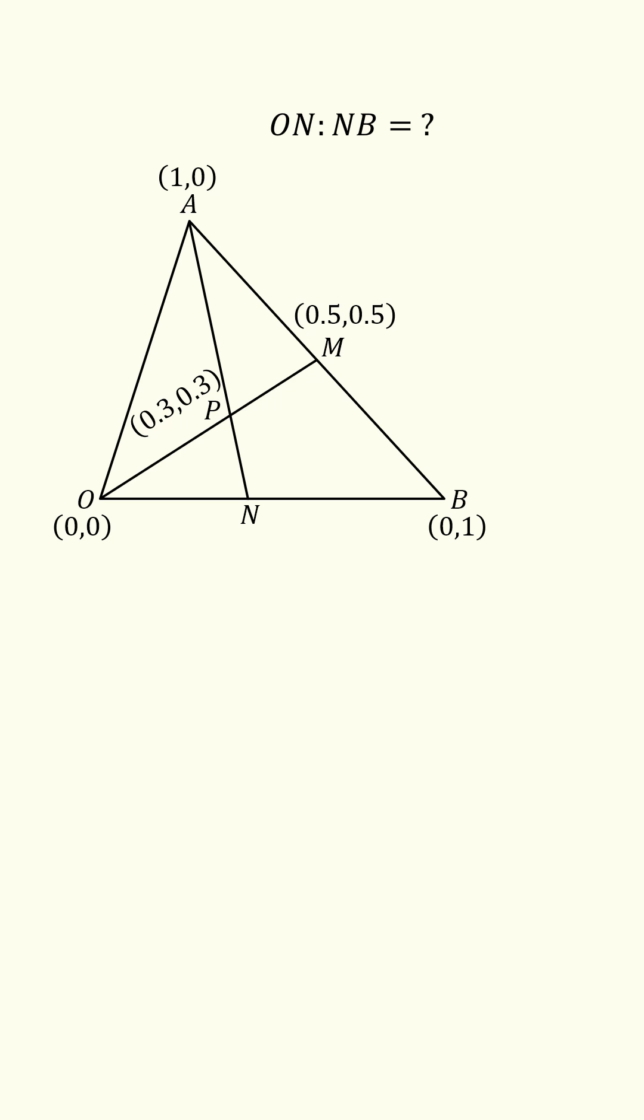From here, the vector AP has coordinates of (-0.7, 0.3). Then let N be the coordinates (0, r), so AN will be equal to (-1, r).